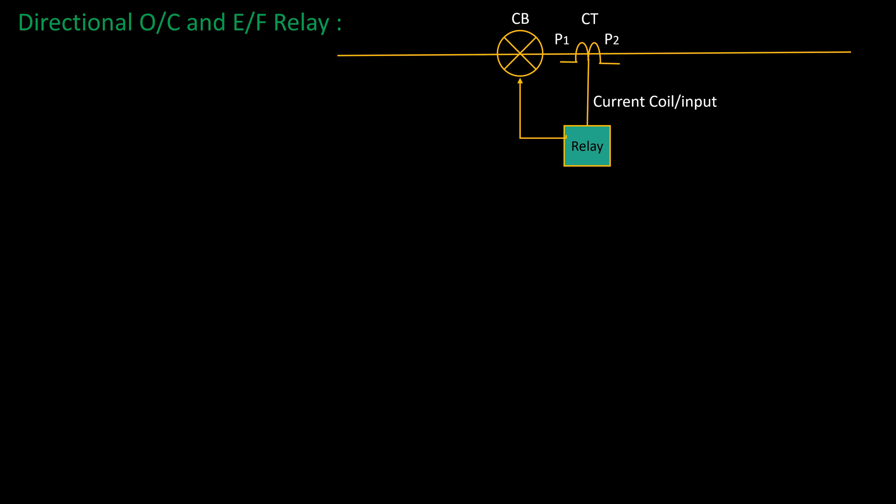Directional overcurrent and earth fault relay is a modified form of non-directional relay where PT voltage, potential transformer voltage coil, is used additionally. The PT voltage acts as directional element.